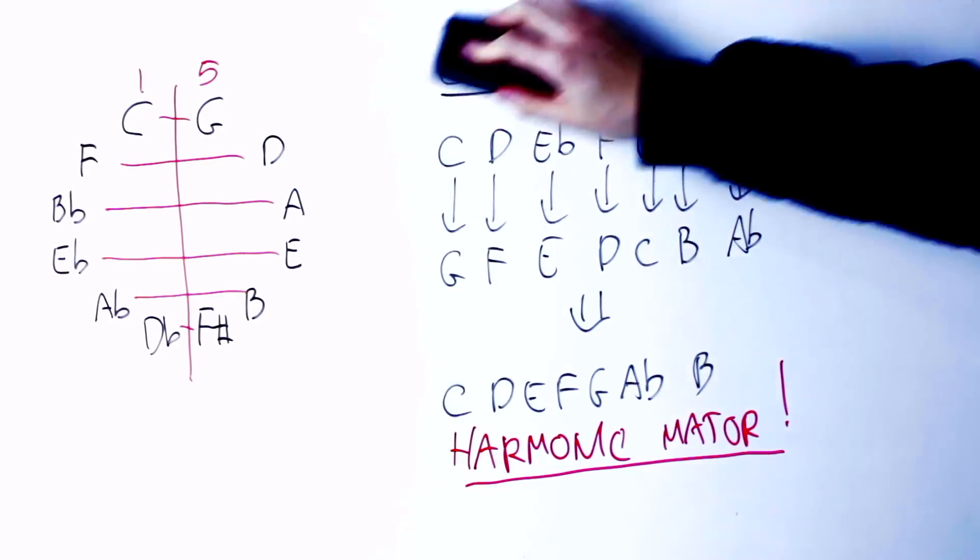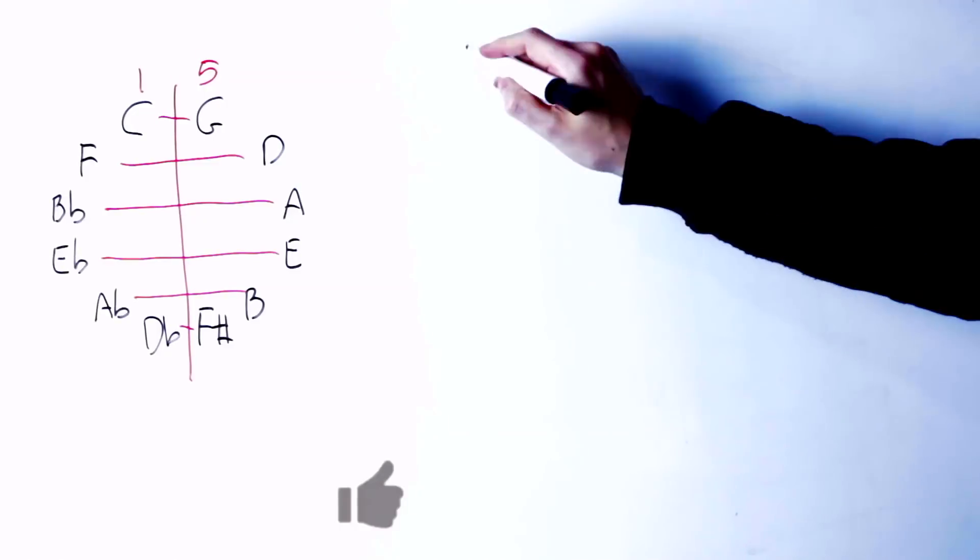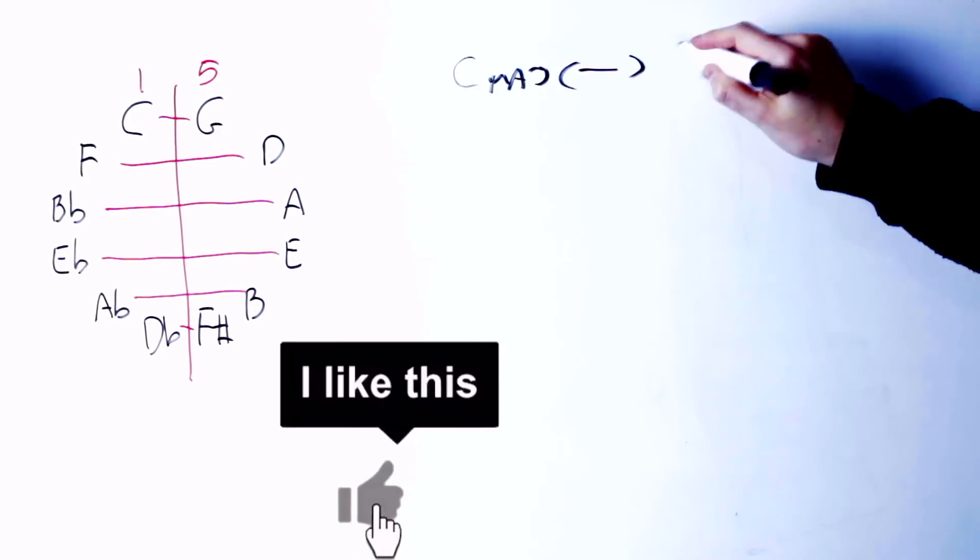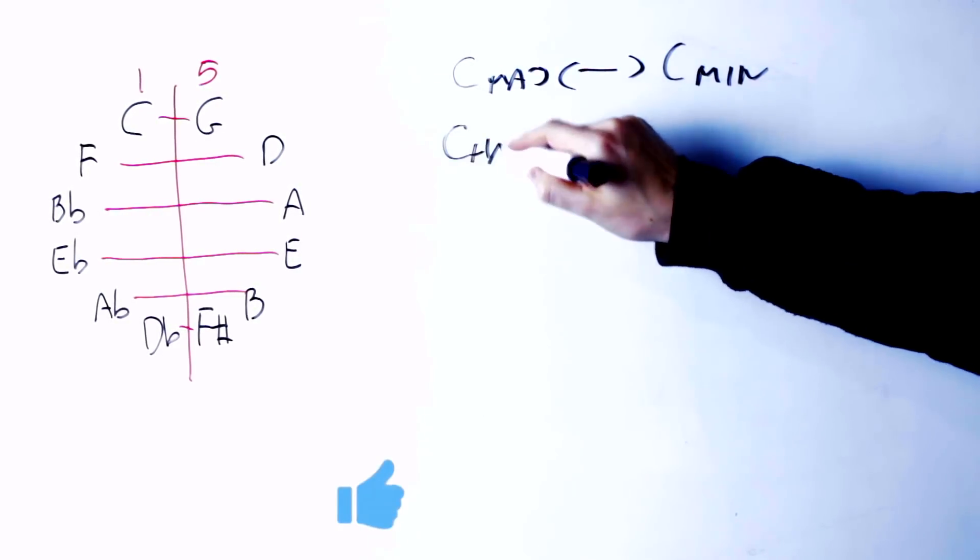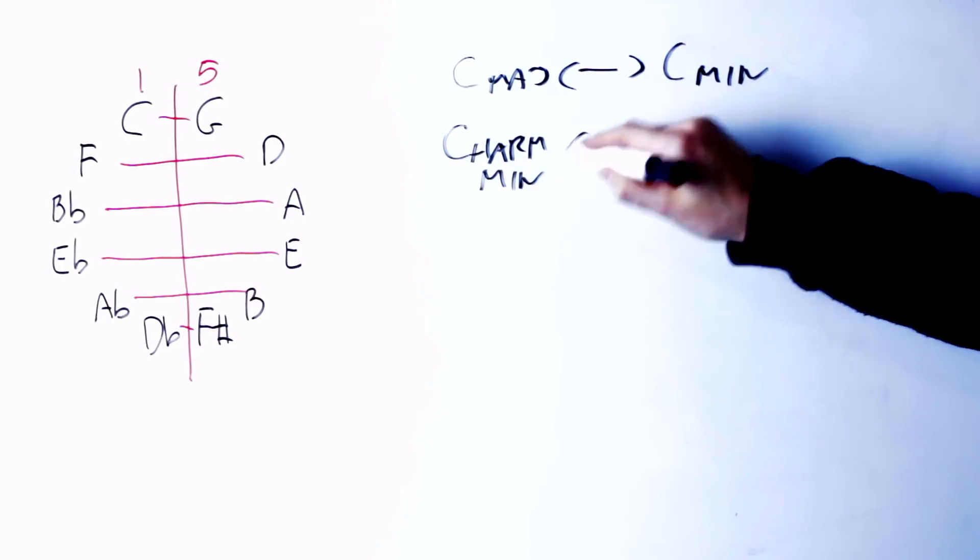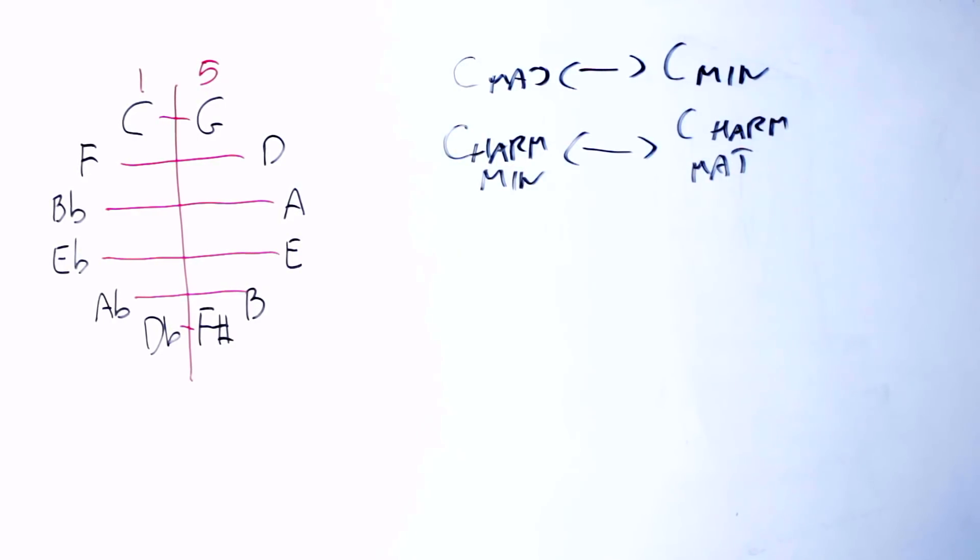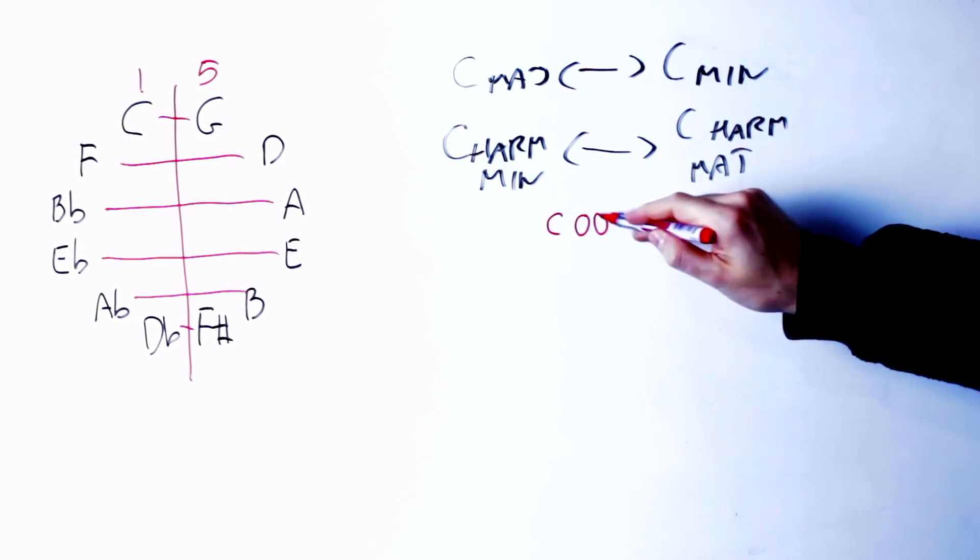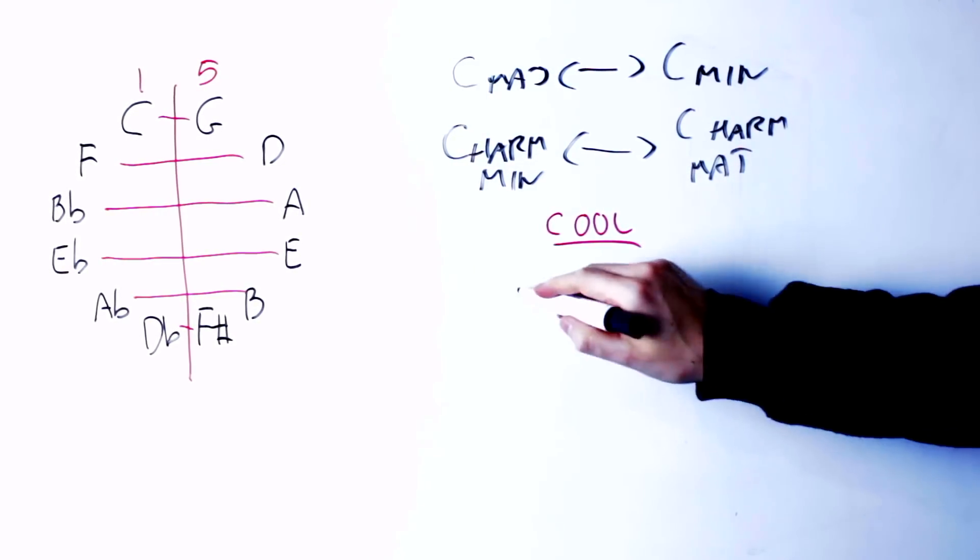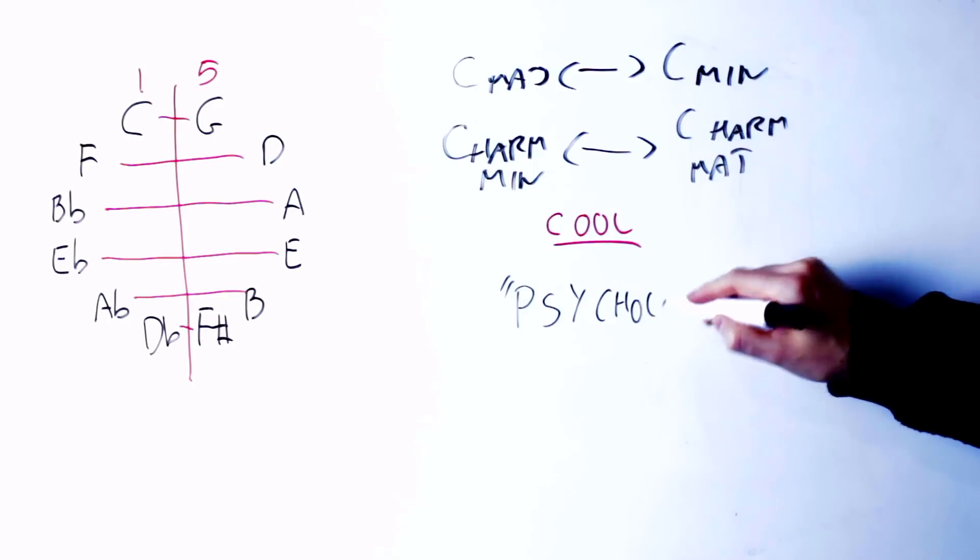This scale was named this way by the composer Nikolai Rimsky-Korsakov at the end of the 19th century. I wondered if Rimsky-Korsakov noticed something about negative harmony before negative harmony actually became a thing. This situation is very pleasing theoretically, it's very satisfying, because if we take the C harmonic minor scale and we invert the scale in negative harmony, we get the C harmonic major scale. So negative harmony connects those two scales together.